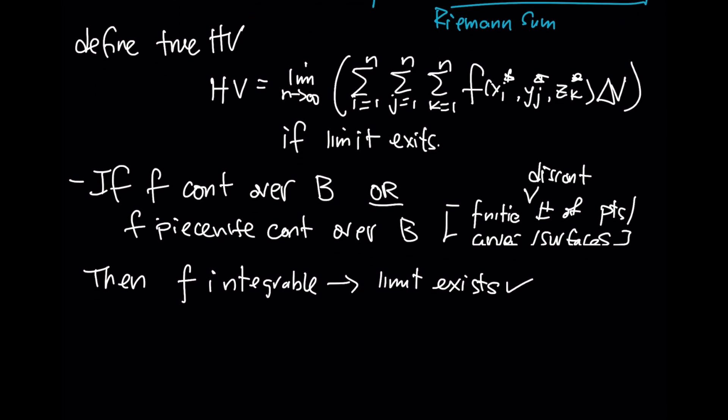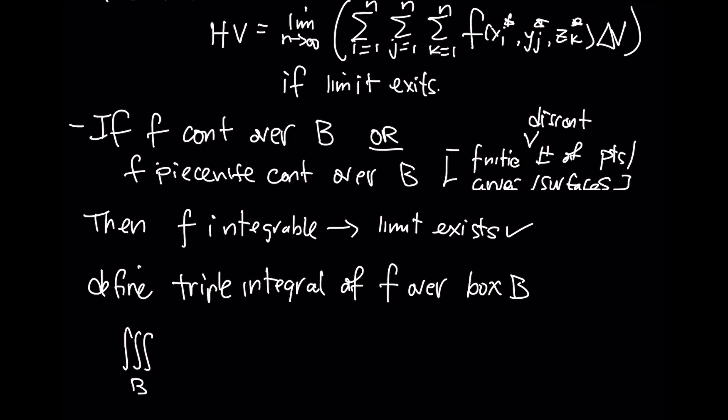And that means we will define what's called a triple integral of F over this box B as simply that limit of the Riemann sum. So we will write it like this. Triple integral of F dV is the limit of that triple Riemann sum. So there shouldn't be any surprise to us. It's exactly an extension of the concept of integration from one dimension and two dimensions. And now we are simply taking our integration domain to be in three dimensions. So this will be our definition of a triple integral.